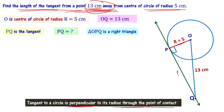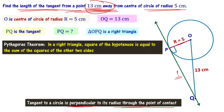We know two sides and need to find the third side length. We apply the Pythagoras theorem: in a right triangle, the square of the hypotenuse is equal to the sum of the squares of the other two sides.